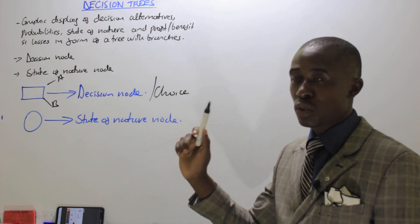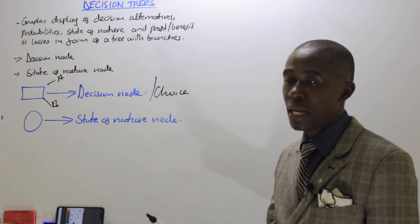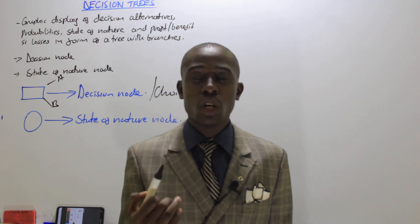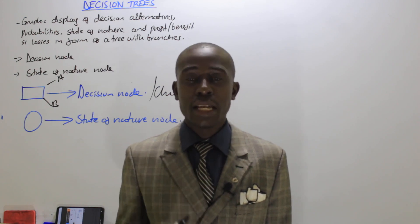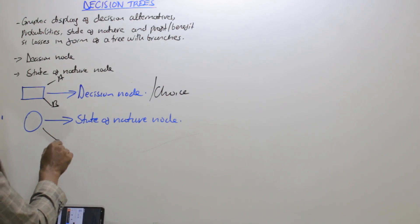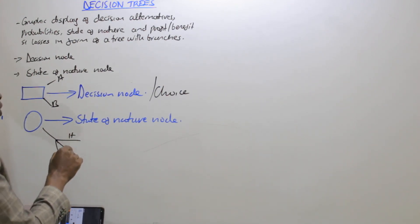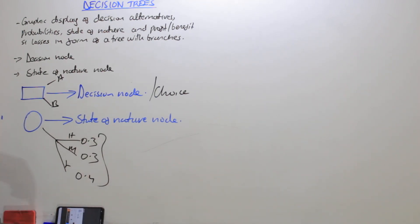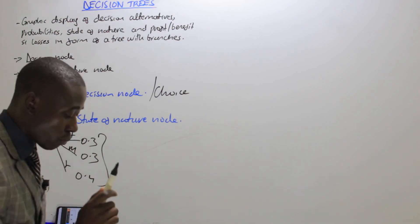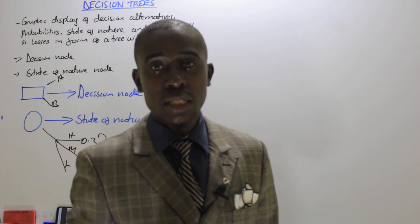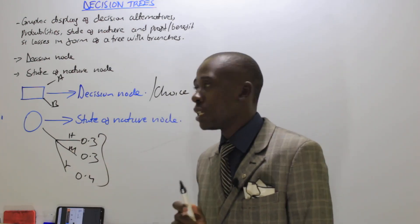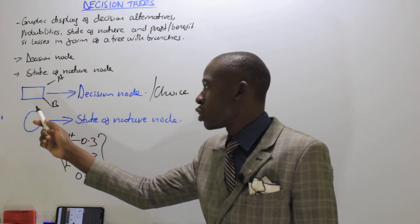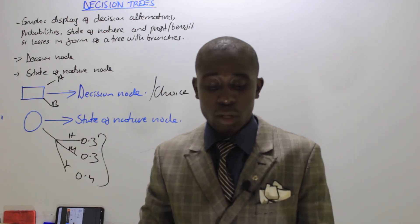What about the state of nature node? In most cases, to identify the state of nature node, they will always be accompanied by probabilities. And why are we accompanying them with probabilities? It is because we don't have control over them — we don't have control over the state of nature. You could be having states of nature at different levels: high, medium, and low, each given a probability. At this node, the decision maker is not in control because things are very uncertain, which is why we attach the aspect of probabilities. So long as you are very good in identifying which node to use — whether decision node or state of nature node — you should be able to handle any decision tree question.